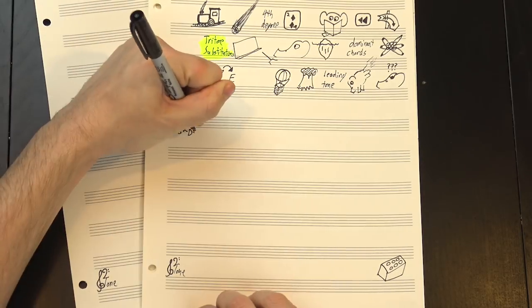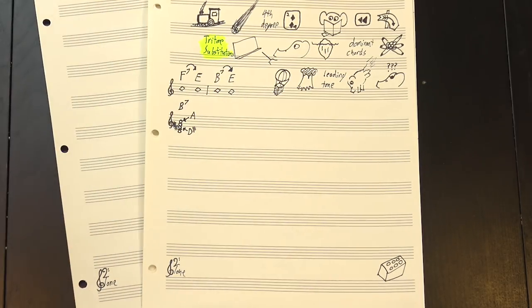In our B7 chord, those notes are D-sharp, the 3rd degree of the chord, and A, the flat 7th, and they're a tritone apart.